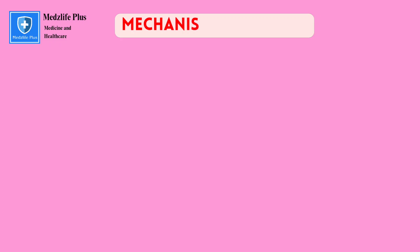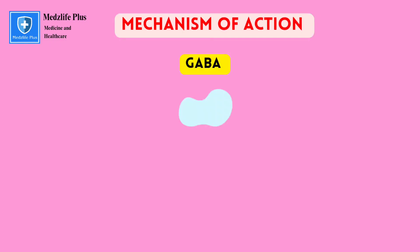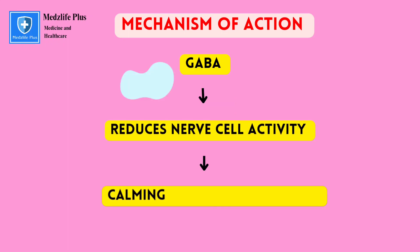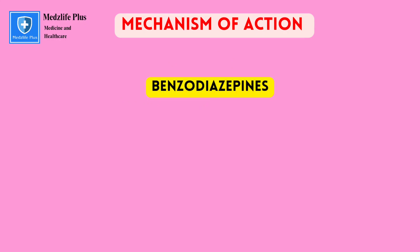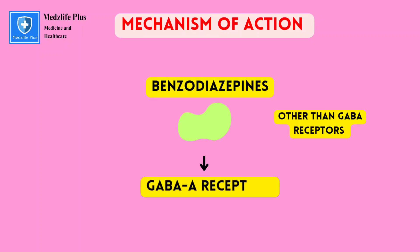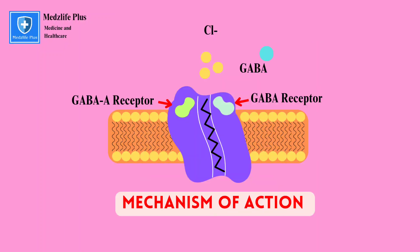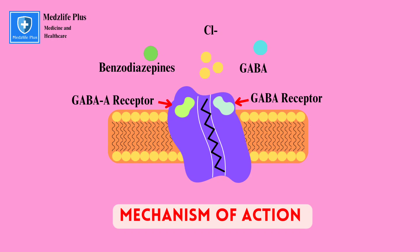Let's discuss the mechanism of action. GABA is the primary inhibitory neurotransmitter in the central nervous system — it reduces nerve cell activity in the brain, leading to a calming effect. Benzodiazepines exert their pharmacological effects by interacting with GABA-A receptors, which are complex proteins located on the surface of neurons in the brain.